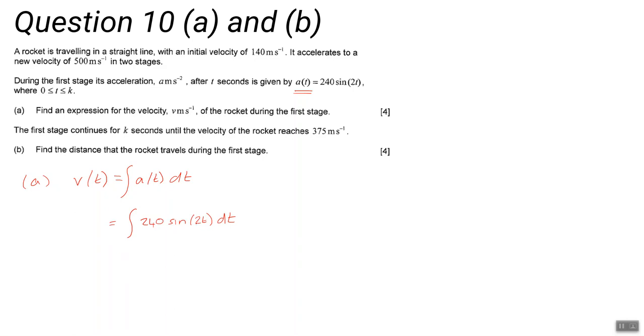Some of you might be able to do this without integration by substitution, but I recommend you use integration by substitution methods. You say u is 2t, du by dt is 2, so therefore dt equals du over 2. Substitute back in, substitute u in, do your integration, resubstitute, and you'll get your expression.